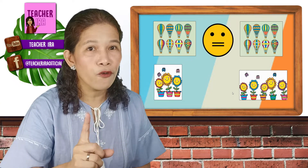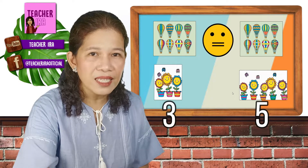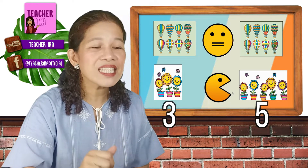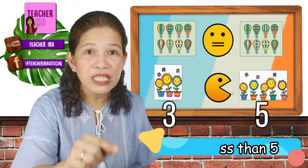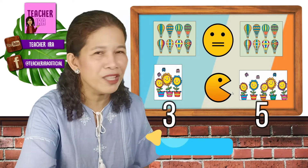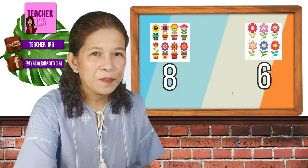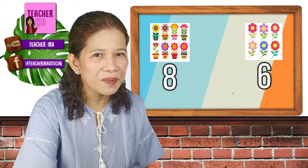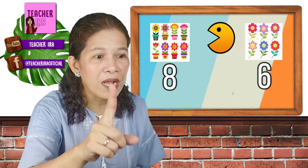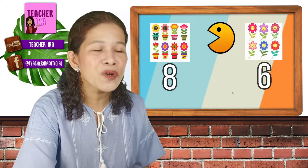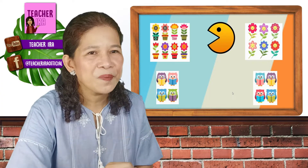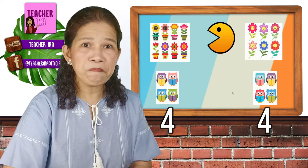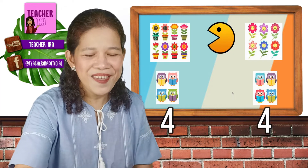How about a set of 3 and 5? Is it greater than, less than, or equal? Of course, it's going to be 3 is less than 5. Pac-Man will open his mouth to the set with more. Always remember that, kids, and you will never go wrong. Now let's have another one. 8 and 6 — greater than, less than, or equal? Yes, because Pac-Man will open his mouth there, that symbol is greater than — 8 is greater than 6. Next, 4 and 4 — that's going to be equal again.